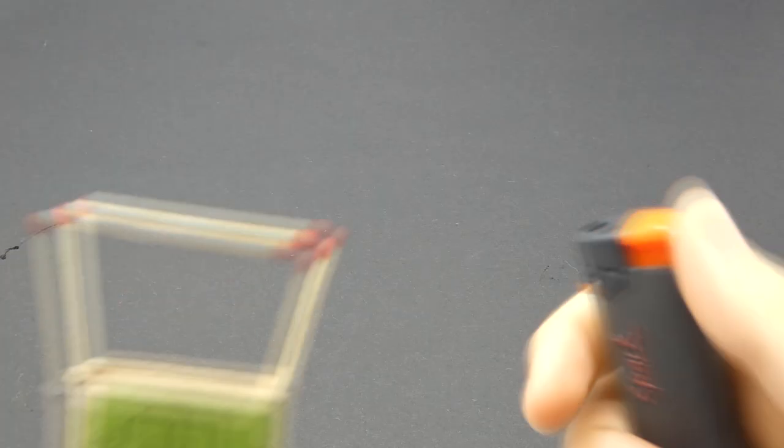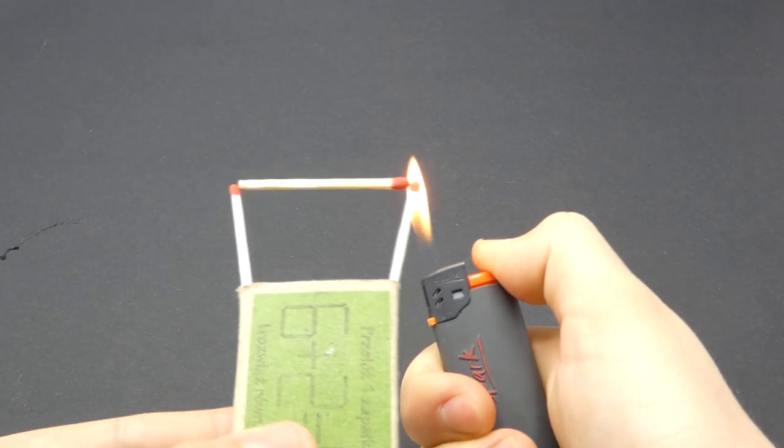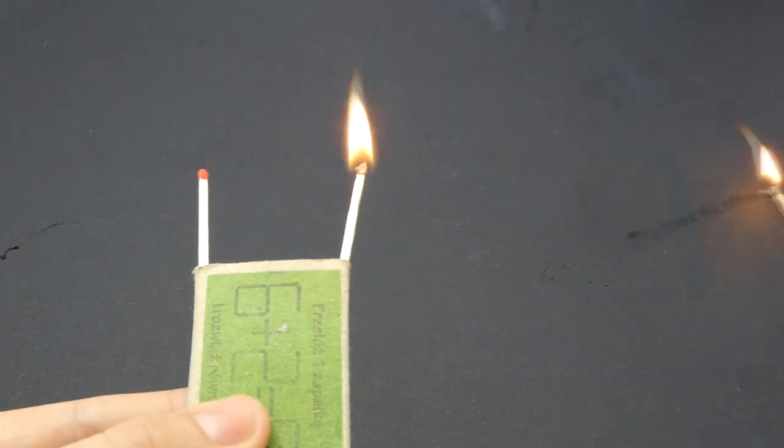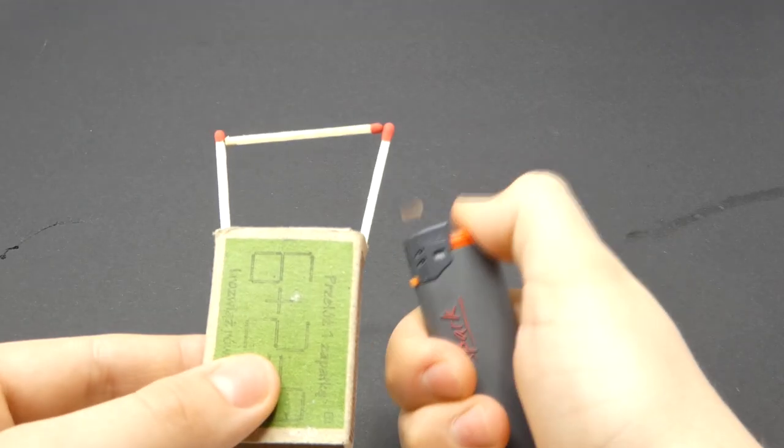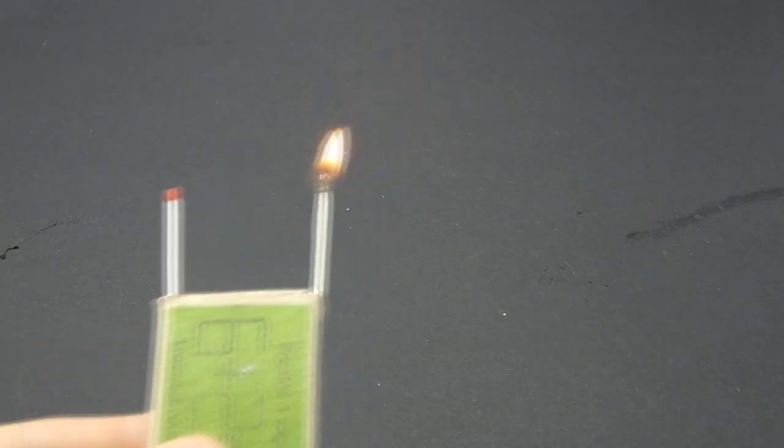Some other non-chemical stuff that you can do with matches include making a super simple match launcher. All you need to do is to attach 3 matches to a matchbox like shown here. It is important to know that there needs to be tension between them. And then ignite this contraption in the place of 2 touching matchheads. And watch the middle match fly away pretty far. The match will always fly to the side of the ignition.